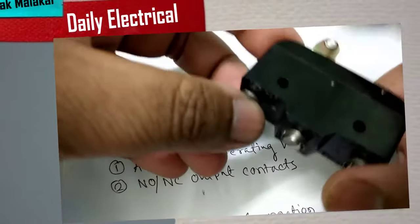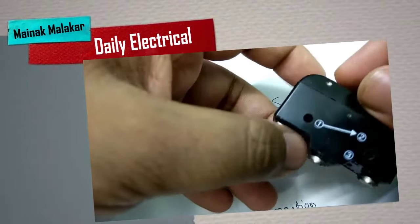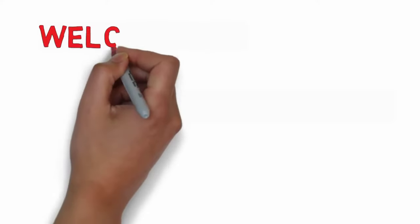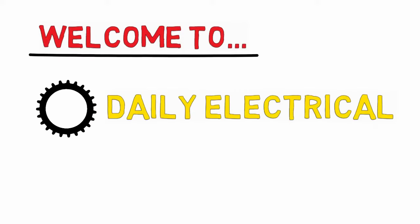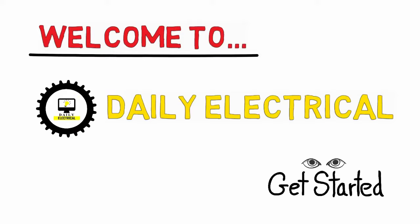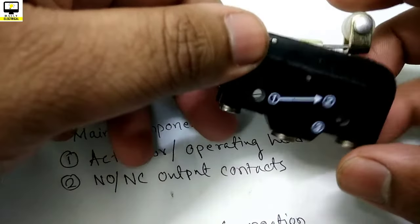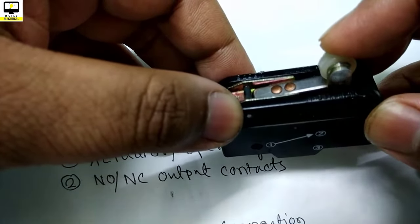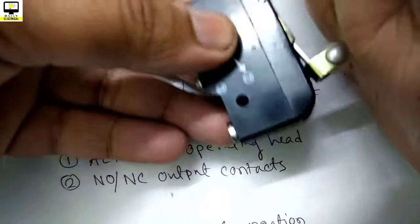Hello friends, once again welcome to our Daily Electrical YouTube channel. I am Moiniak and today your topic is limit switch. As we come to the definition, the limit switch is a mechanical type switch where it has an actuator which can sense the pressure of any physical object moving towards it.